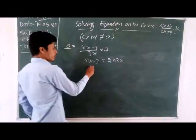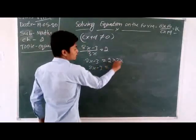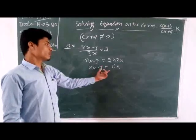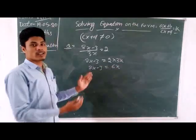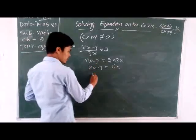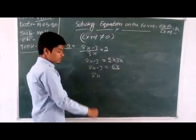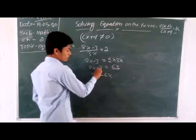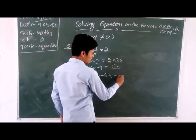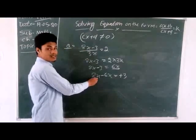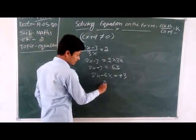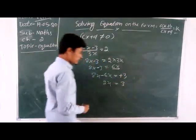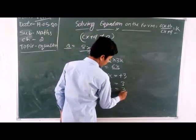The question is: (8x minus 3)/(3x) equals 2. We transpose the 3x — so 8x minus 3 equals 2 into 3x, giving 8x minus 3 equals 6x. Now both sides have variables, so we separate the variables. Transposing 6x to the left side gives minus 6x. And minus 3 transposed gives plus 3. So 8x minus 6x equals 2x.